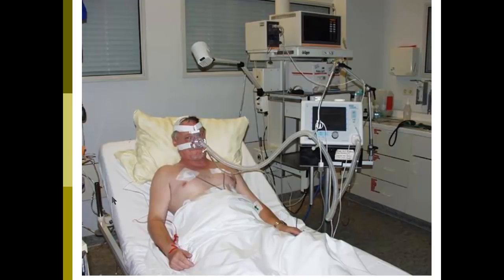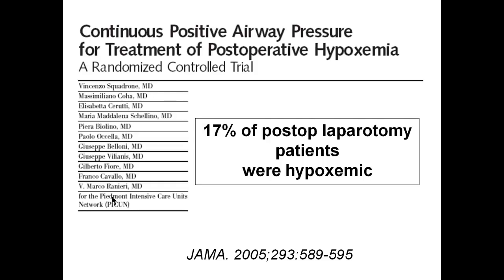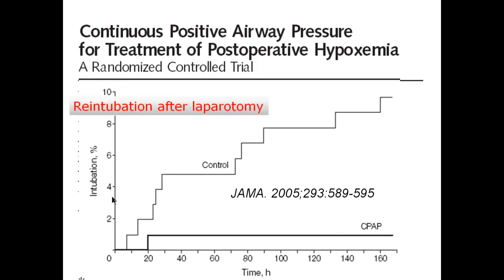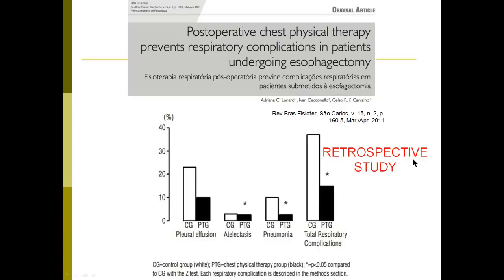Let's talk about respiratory failure after abdominal surgery and potential approaches to limit those complications. Non-invasive ventilation with CPAP may be effective in reducing pulmonary complications. In a randomized trial from Italy, 17% of post-laparotomy patients were hypoxemic and were randomized to conventional therapy or CPAP. Patients who received CPAP were far less likely to subsequently require intubation over the following days. It has also been shown in a retrospective study that physical therapy can be associated with reductions in pleural effusions, atelectasis, pneumonia, and total respiratory complications. Good analgesia and pulmonary physiotherapy may both be effective.